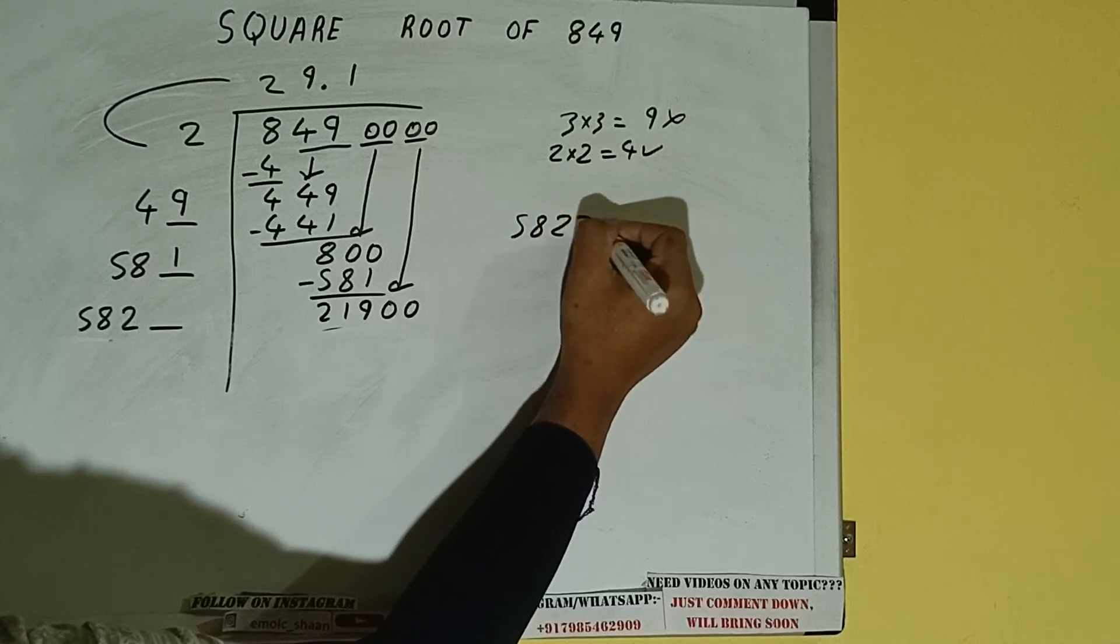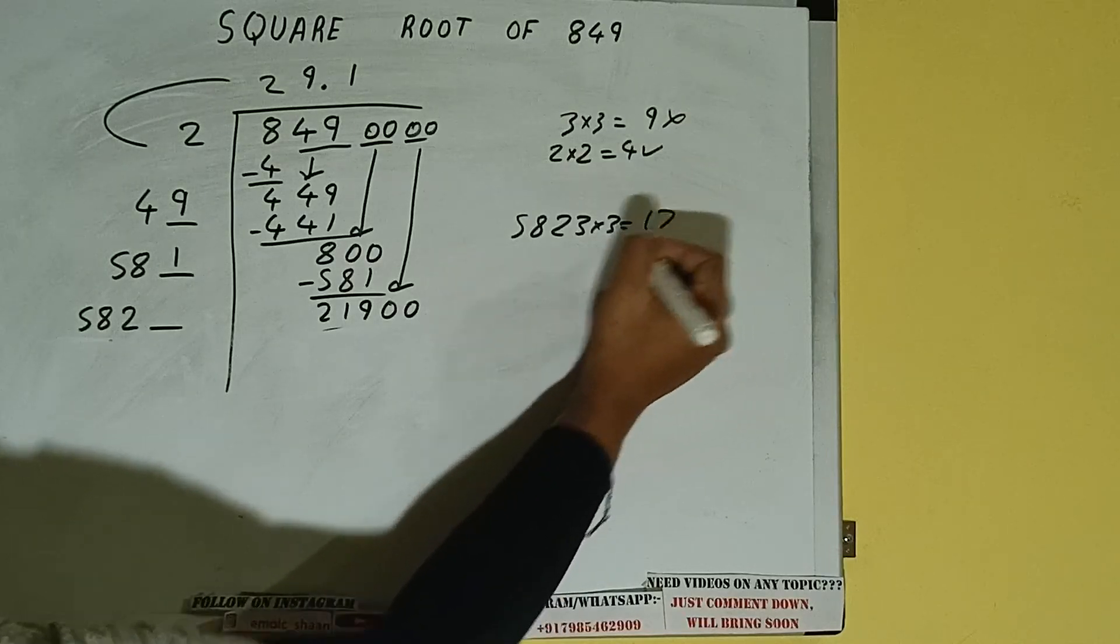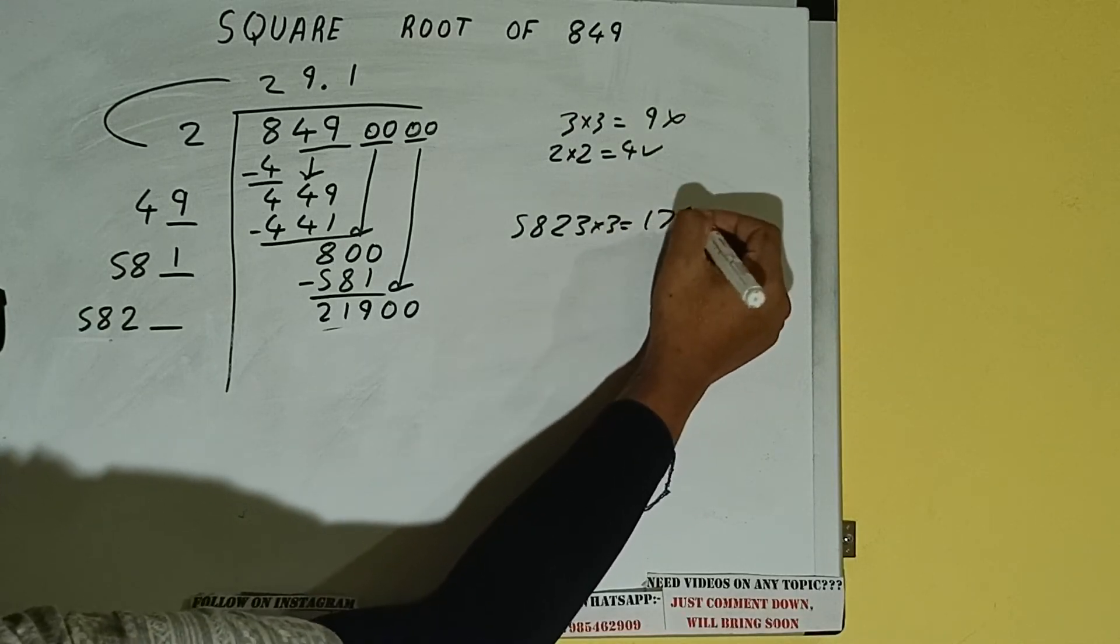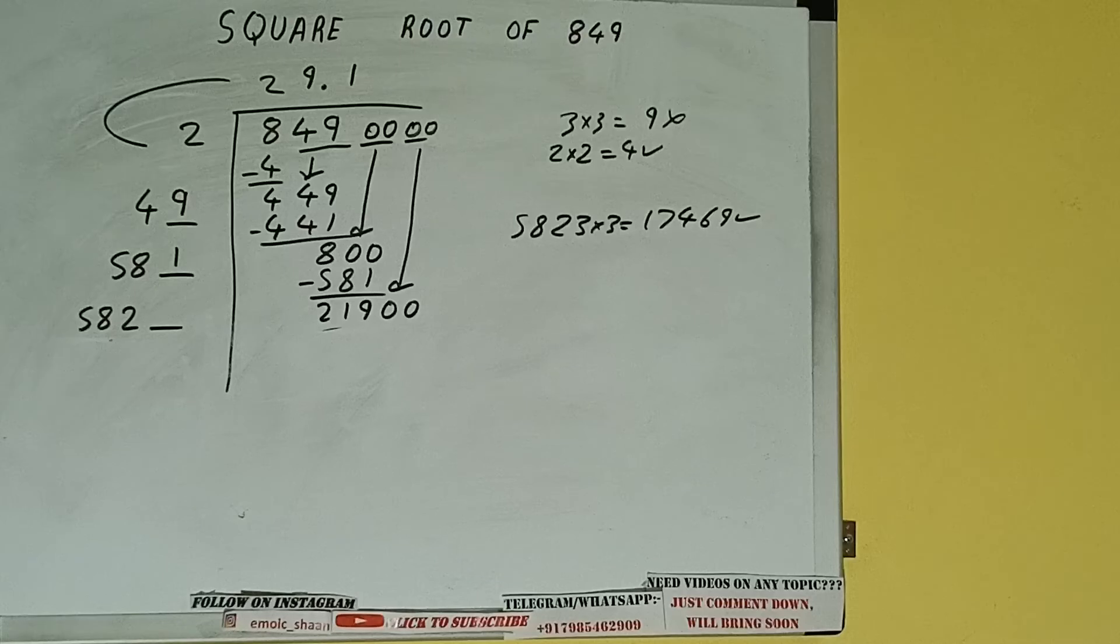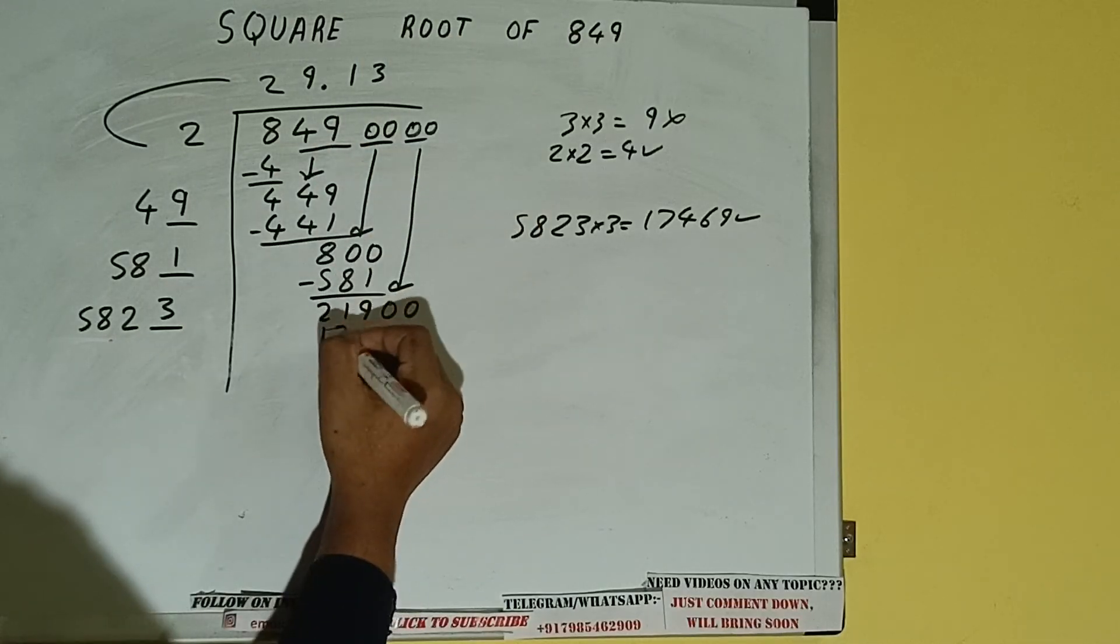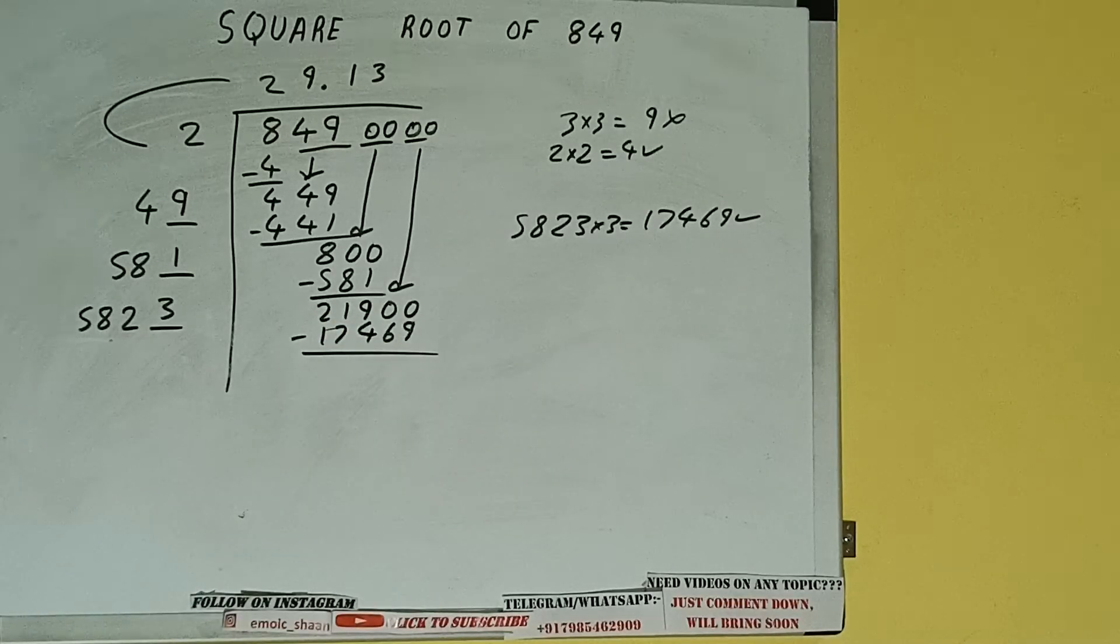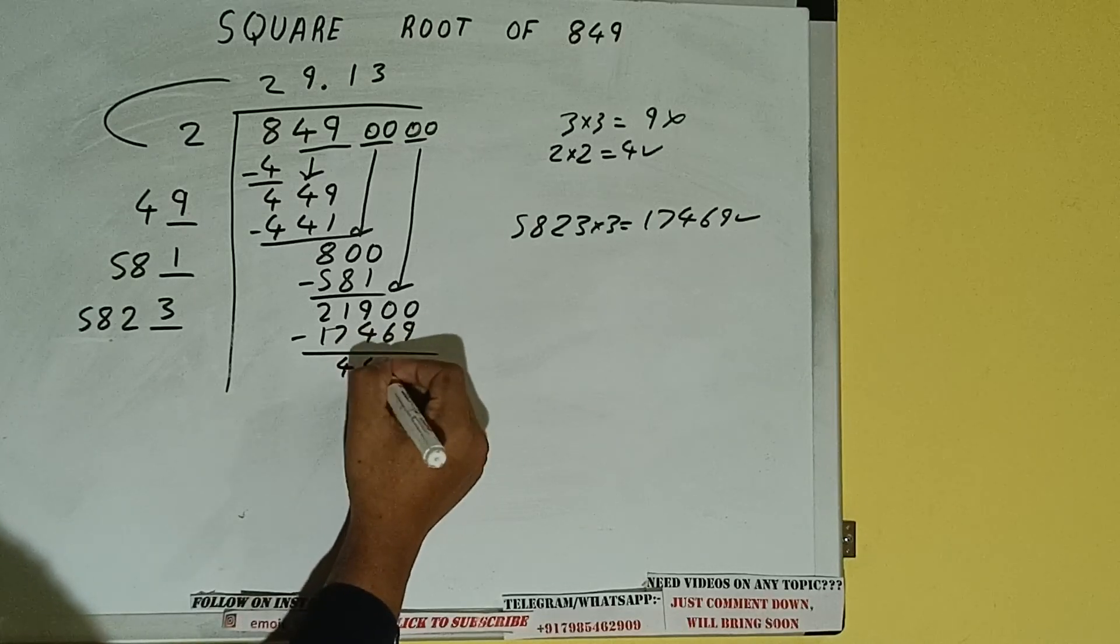So 5823 into 3 we can try, and we'll be having 17469 which is good to take. So 3 here and 3 here. 17469. Subtract, and we'll be left with 4431.